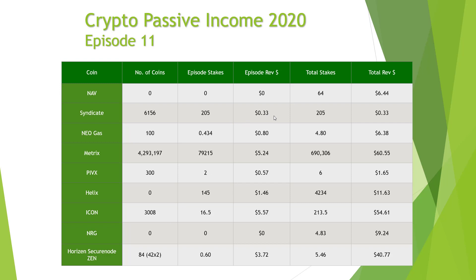In terms of rewards: 33 cents for Syndicate, 80 cents for NEO gas, $5.24 for Metrics, 57 cents for PIVX, $1.46 for Helix - that was before I sold them in the first week to ten days. Icon came in at $5.57. Nothing for Energy - we got rid of those coins along with NAV a few weeks ago. Finally, our masternode: $3.72 for our two Horizon secure nodes.